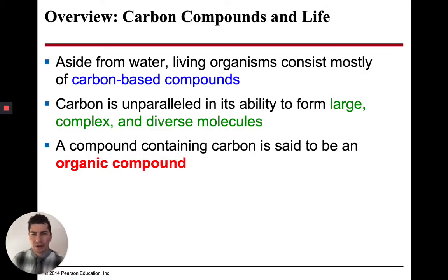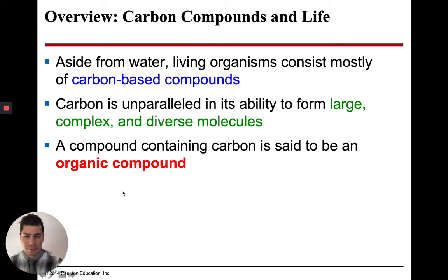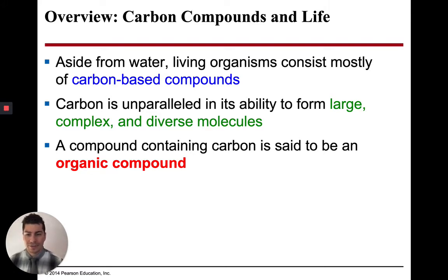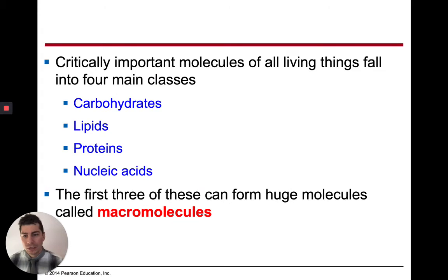Our bodies are made up primarily of carbon. In other words, carbon is going to be the main element that makes up a lot of the molecules in our bodies. An organic compound is just a compound where carbon is in it. In living things, we call them organic compounds because they contain carbon and they're in something living. Later on in this chapter, we're going to go over the four macromolecules in depth.